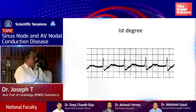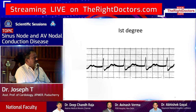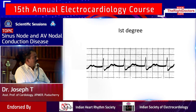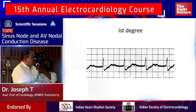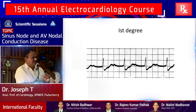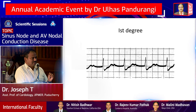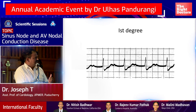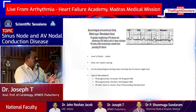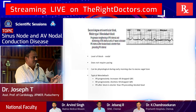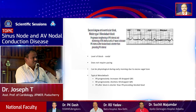Mobitz type 1 block means the level of block is at the nodal level, the escape is stable, and immediate intervention may not be required — it can even be physiological in young athletes with increased vagal tone. In a typical Wenckebach, the PR progressively increases until the dropped QRS, the RR continuously shortens before the dropped QRS, and the PR after the block is the shortest — shorter than the PR before the block.